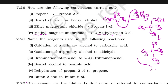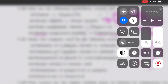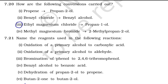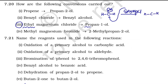Ethyl magnesium chloride to propan-1-ol. Ethyl means two carbons; propane means three carbons, so we need to increase by one carbon. For this, take formaldehyde. When treated with ethyl magnesium chloride (Grignard reagent), the ethyl group adds to formaldehyde. On hydrolysis, the product is C2H5-CH2-OH, which is propan-1-ol. It can be prepared by the treatment of ethyl magnesium chloride with formaldehyde.